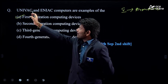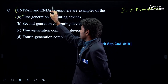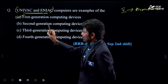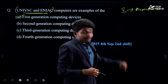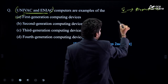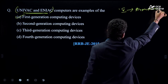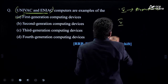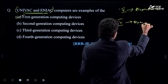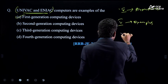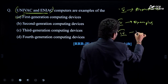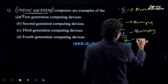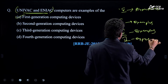What you need to understand: this year they gave two computer names and asked which generation they belong to — first generation. In the previous question, they gave fifth generation and asked for its expectations. Now you frame another question: what are the examples of fifth generation computers, or fourth generation computers, or expectations from fourth generation?